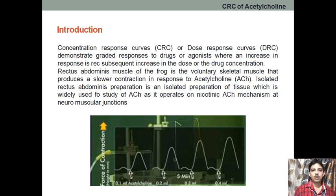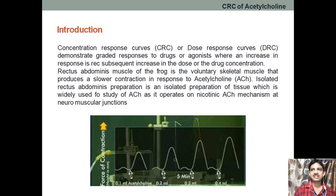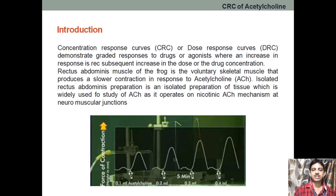Here we are using acetylcholine as the drug and the tissue is the frog rectus abdominis muscle. The frog rectus abdominis muscle is a voluntary skeletal muscle, and as it is a skeletal muscle, it will be innervated by cholinergic receptors — specifically NM receptors. If it were a ganglion, it may be the NN receptor which responds to acetylcholine, producing contraction as the response.